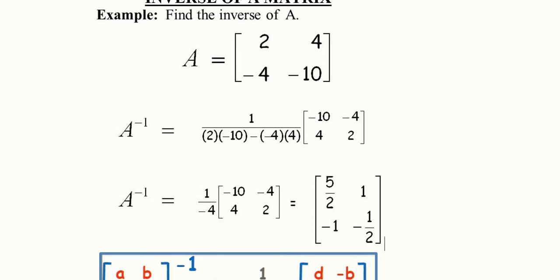Now we can find the A determinant and A determinant is found here. The original matrix was 2 into minus 10 minus 4 into minus 4. So here it is.